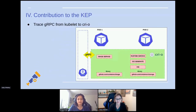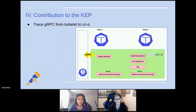When we are done with everything, this is how our contribution is going to look. We would be able to trace all the gRPC calls made from kubelet to CRI-O. Whenever kubelet gets a request to create a pod, it calls the CRI-O engine, which does its work to launch the containers and put them inside the pod. All these transactions would be sent to the tracer so that if there is any latency issue, you can pinpoint where.